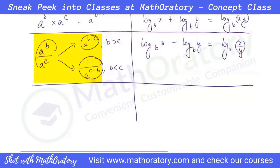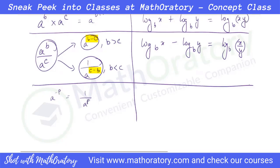So both of these should be equal — it just depends on whether b is greater than c or b is less than c. If a is raised to a negative power and I want to make this power positive, then a will go to the denominator — the number itself reciprocates. Since log itself is a power, if I convert a negative log to positive, that x should go to the denominator.